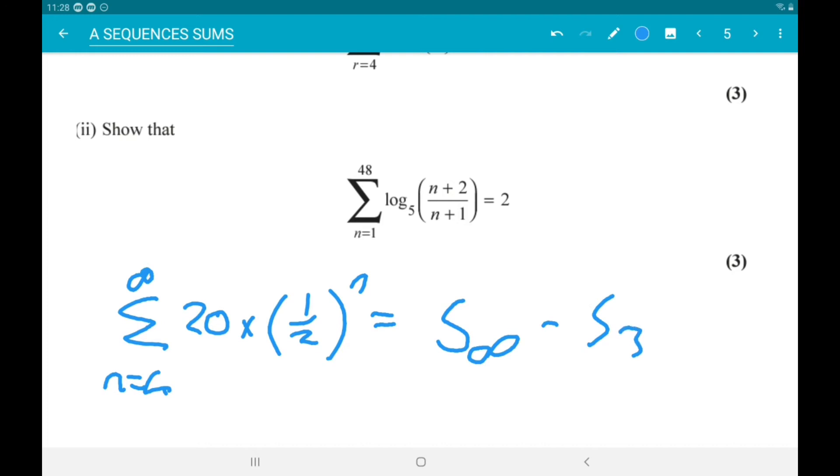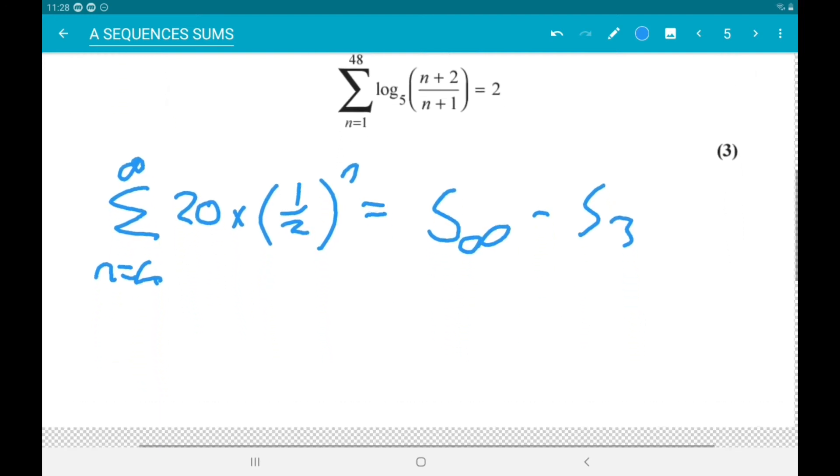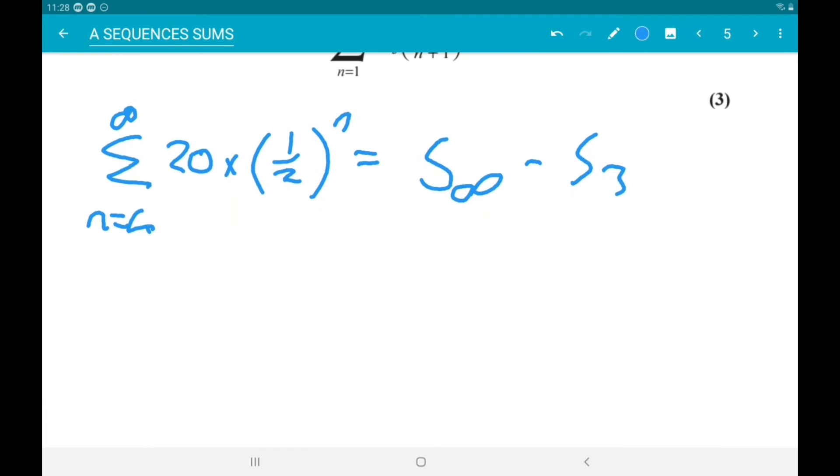Alright, now the sum to infinity, well, for that we need a and r. So a is twenty times one half to the 1, so that's ten. And we're multiplying by one half to get from term to term, so r is one half.